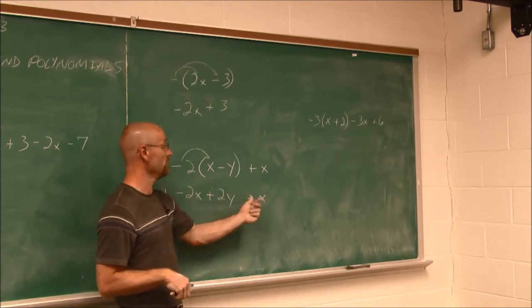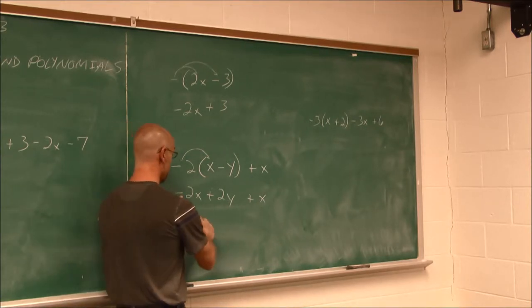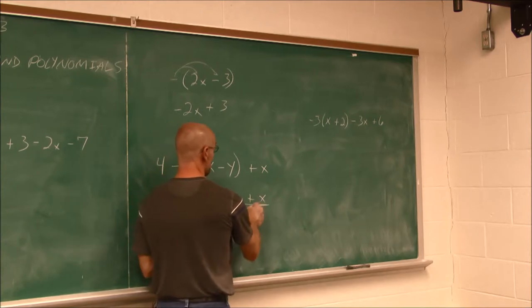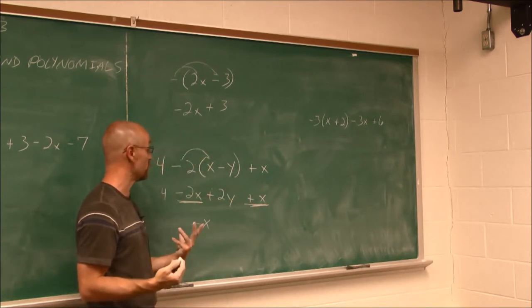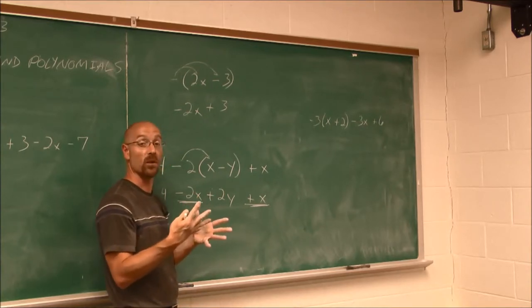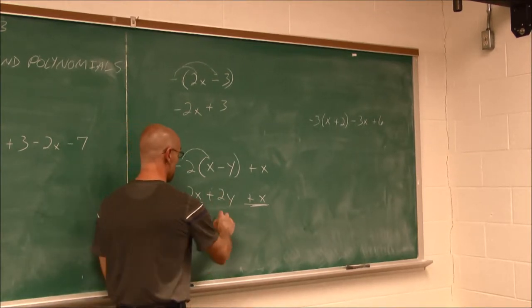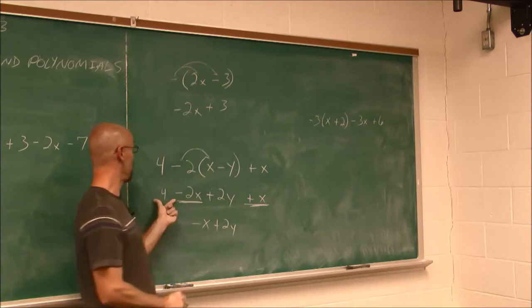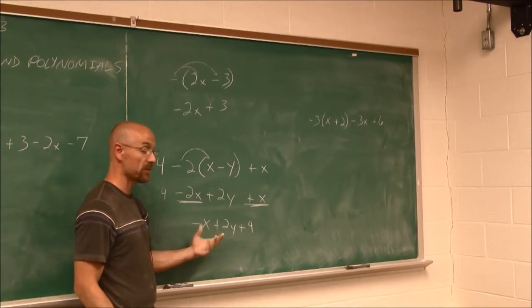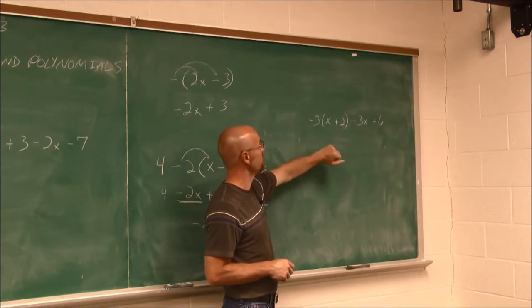Now I can rearrange using the associative property. I have negative 2x and positive 1x — like terms, both x to the first power. Negative 2 and 1 have different signs; the difference is 1, and the larger value is negative, so I get negative 1x. When working with lots of terms in a four-term polynomial, I like to underline like terms or circle them to identify multiple sets. So I have negative x plus 2y plus 4.